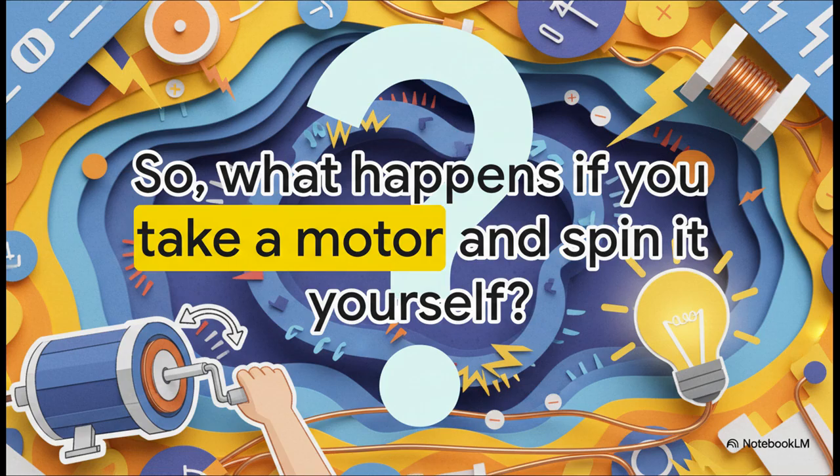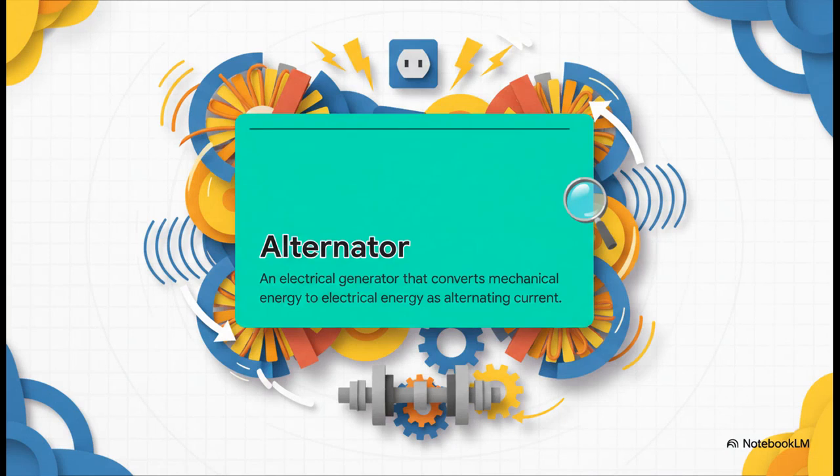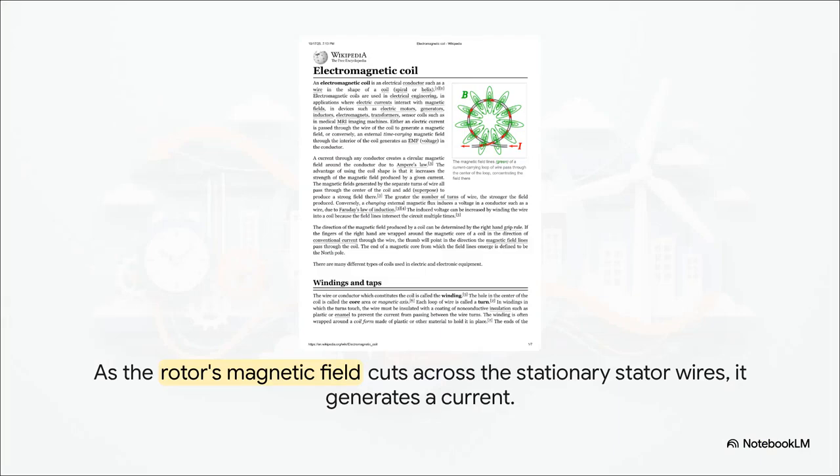Now, here's where it gets really interesting. You can run this whole process completely in reverse. Do that, and it's not a motor anymore. It's a generator. It's making electricity now. A perfect example is the alternator in your car. It's just a type of synchronous generator. As that rotor spins, its magnetic field cuts across the stator wires, and boom, you've got current.